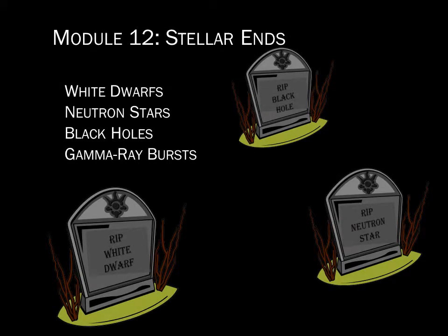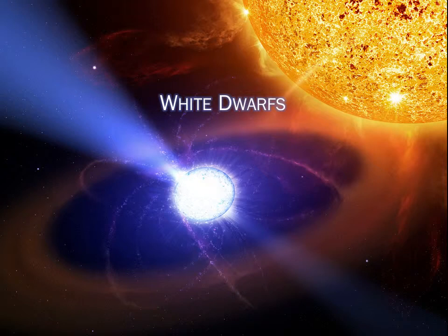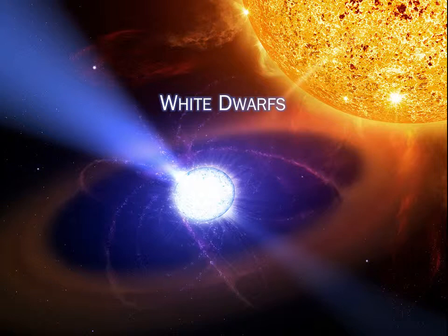In this lecture, we'll go into greater detail about what white dwarfs are and what can happen to a white dwarf in a binary system. In the last chapter, we learned stars of different masses leave different types of stellar corpses. Low mass stars like the Sun leave behind white dwarfs when they die. High mass stars die in enormous supernova explosions, leaving behind either neutron stars or black holes. Today, we're going to look in detail at the white dwarfs.